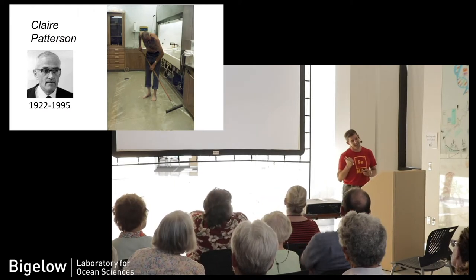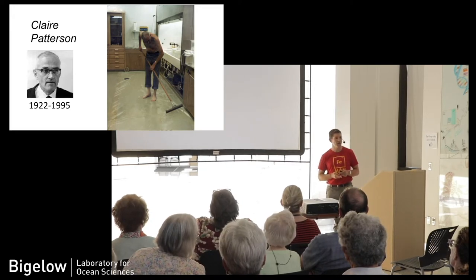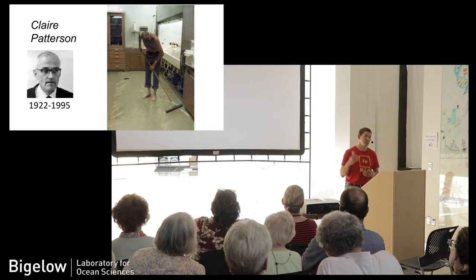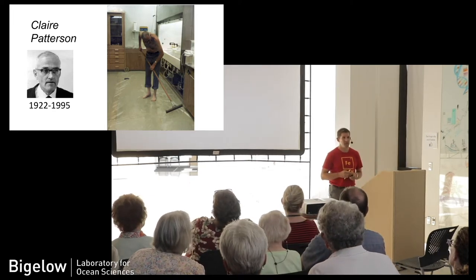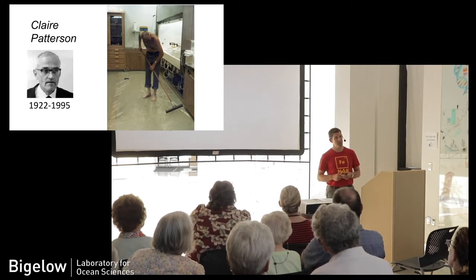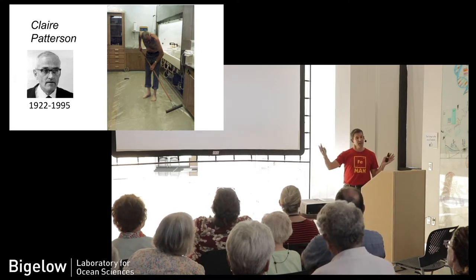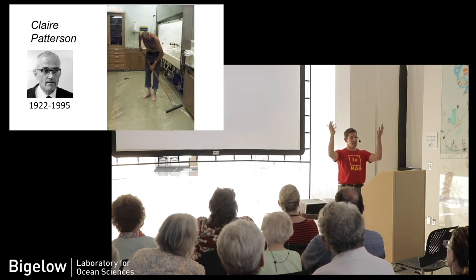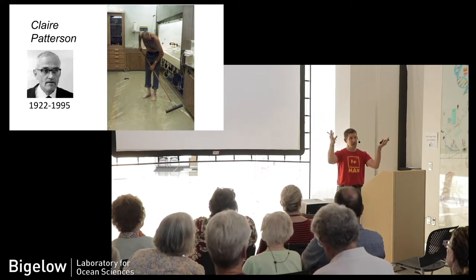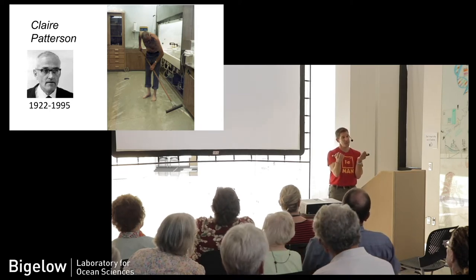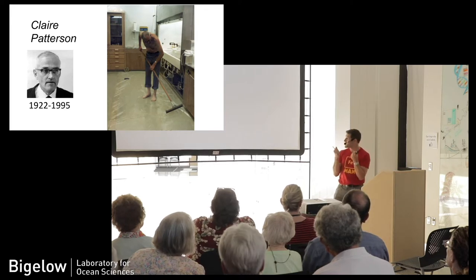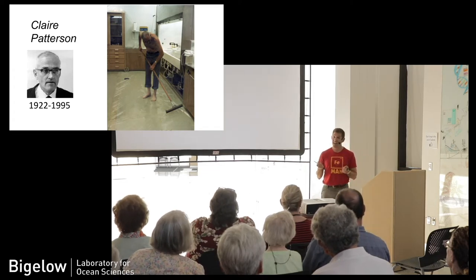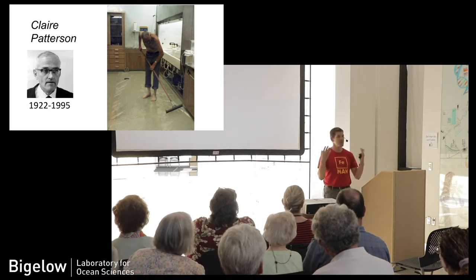How was it that it took 80 or 90 years for oceanographers to figure out that they were making bad iron measurements? The credit for that belongs to a geochemist named Claire or Pat Patterson. He really came into science right after World War II in the late 40s. His project was to try to figure out the age of the Earth. He was trying to look at the ratio of uranium and lead in meteorites. What he kept finding was that his samples were contaminated because there was a lot of leaded gasoline being used and there was a lot of lead paint being used. There was lead everywhere.